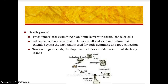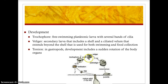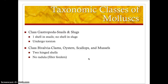Reproduction is sexual, with the exchange of sperm and egg via external fertilization. In development, you have the trochophore stage — a free-swimming planktonic larva with several bands of cilia. If you find one during a plankton tow, you are looking at mollusk development. The veliger stage is the second larval stage, which includes a shell with a ciliated velum that extends beyond the shell, used for both swimming and food collection. In adults, especially gastropods, a process called torsion occurs where the internal organs undergo a sudden rotation to fit into the shell.